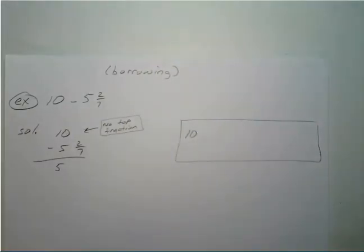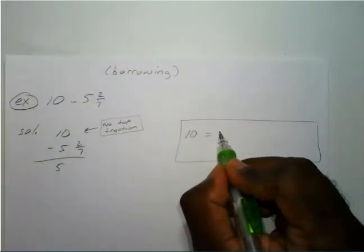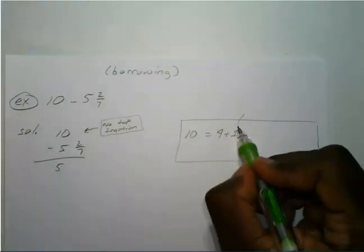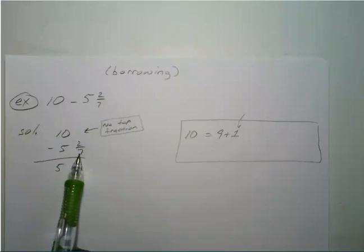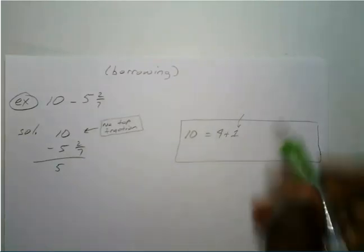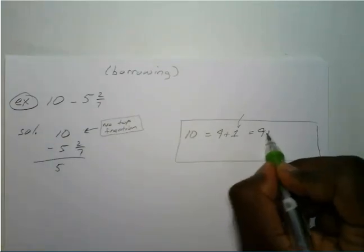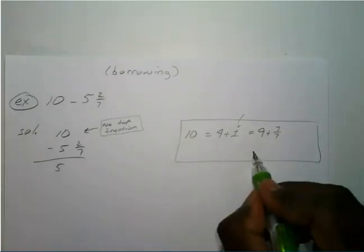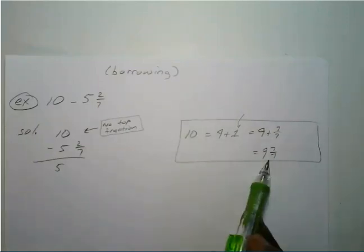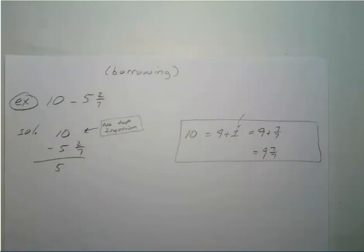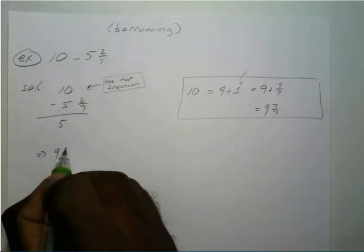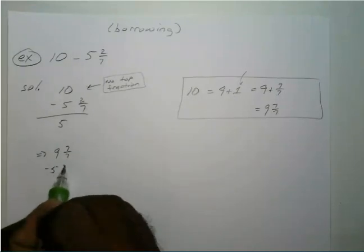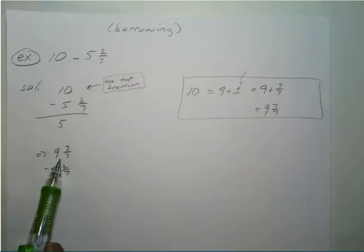To borrow: ten can be rewritten as nine plus one. Since the denominator is seven, we turn that one into seven-sevenths. So ten becomes nine plus seven-sevenths, which we rewrite as nine and seven-sevenths — that's still just ten, since nine plus one equals ten. We just wrote it a different way. So instead of ten, we'll use nine and seven-sevenths minus five and two-sevenths.